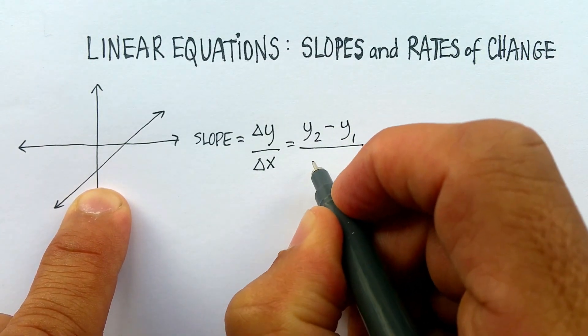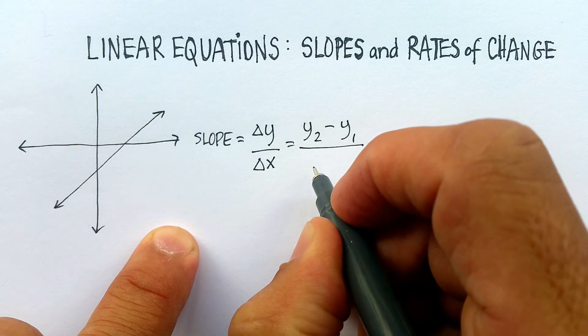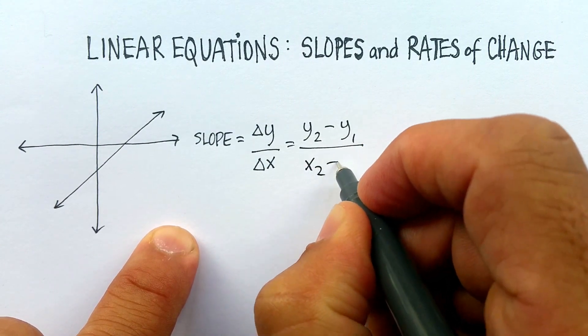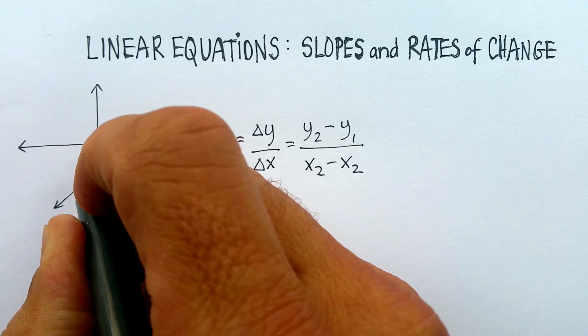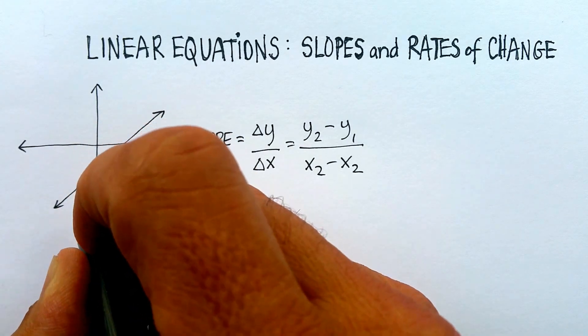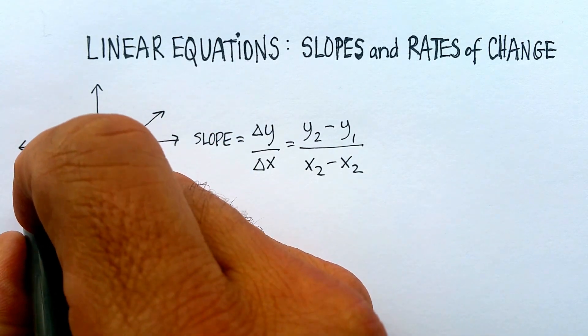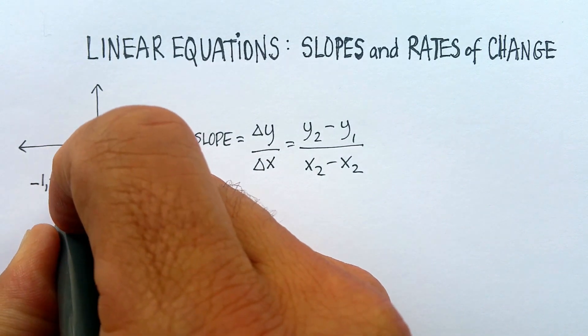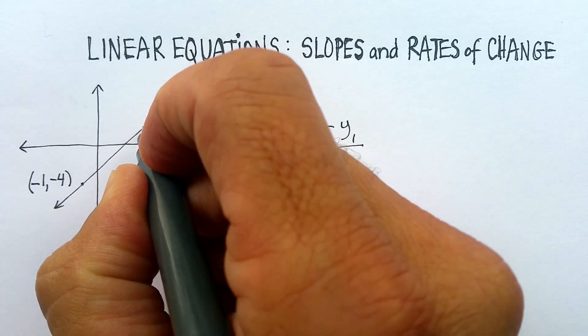Which means that if I have two different coordinates, I just subtract the y coordinates and then I subtract the x coordinates. So if I had something like, let's just make this negative 1, negative 4, and if I had something like this one over here, let's make this 3 and 1.